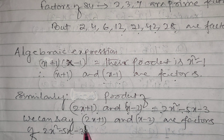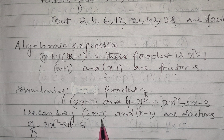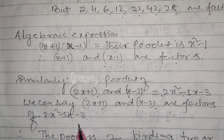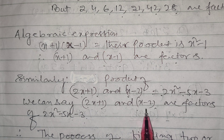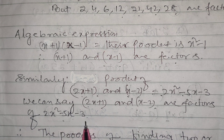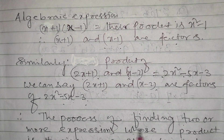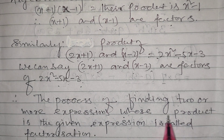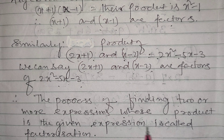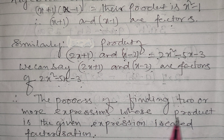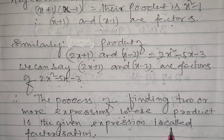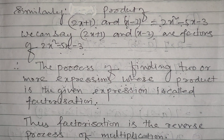We can say 2x+1 and x-2 are factors of 2x² - 5x - 3. Therefore the process of finding two or more expressions whose product is a given expression is called factorization. Factorization is the reverse process of multiplication.